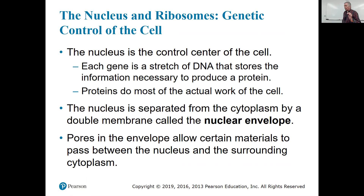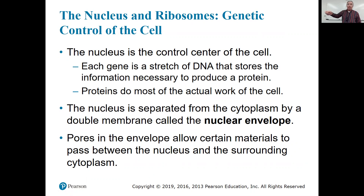The nucleus is a membrane-bounded organelle, which is the hallmark of eukaryotic cells. It's separated from the cytoplasm by a double membrane called a nuclear envelope, and the nuclear envelope has big pores in it because big molecules are going to have to come out. Specifically, an RNA molecule comes out of the nucleus, carries information from a gene, and goes into a ribosome to be translated into a protein.